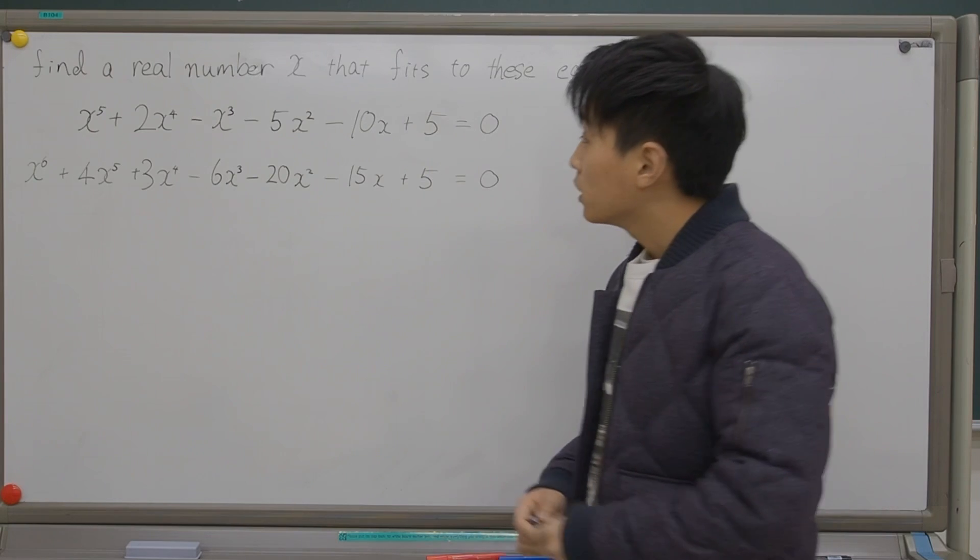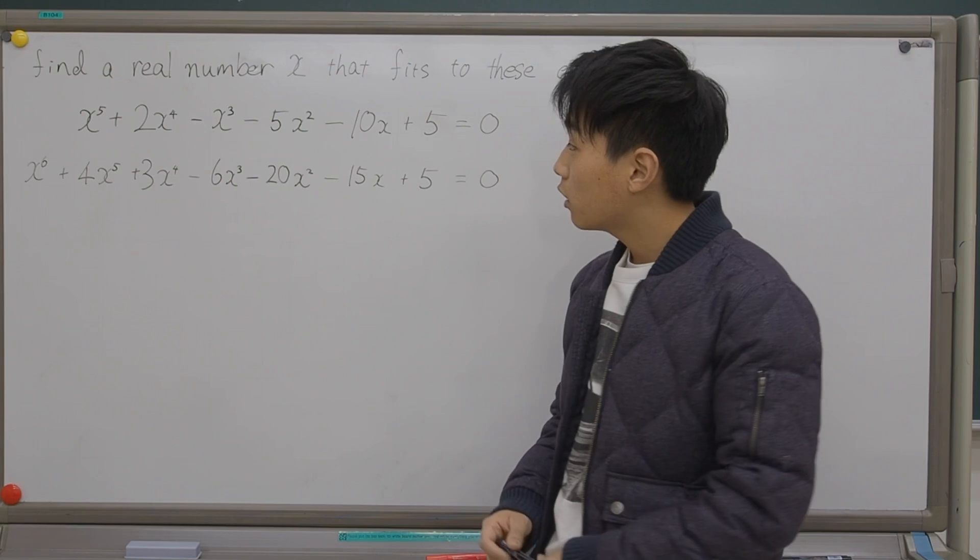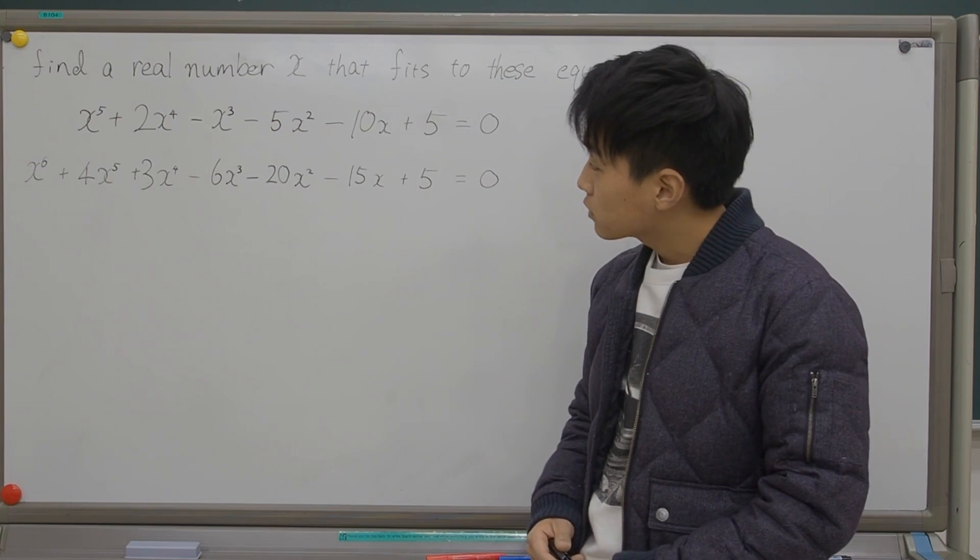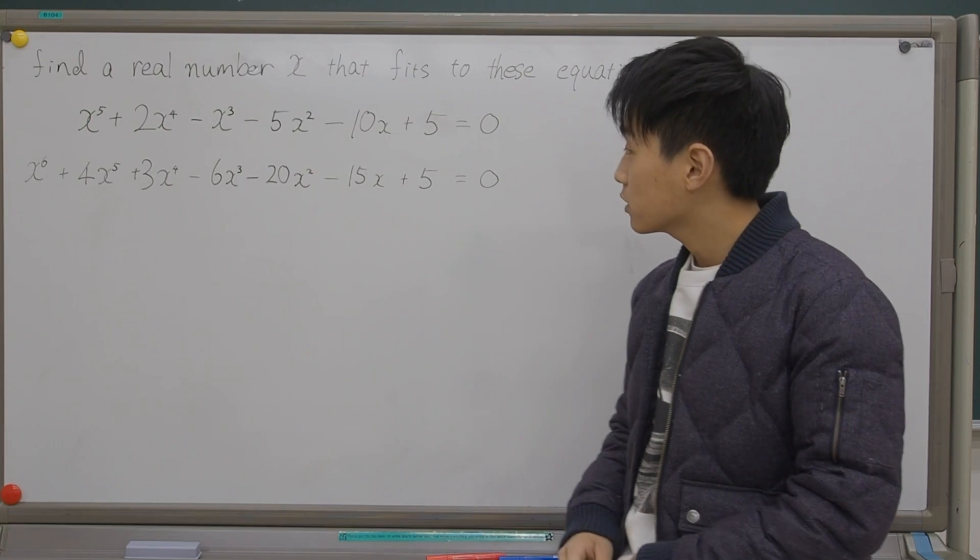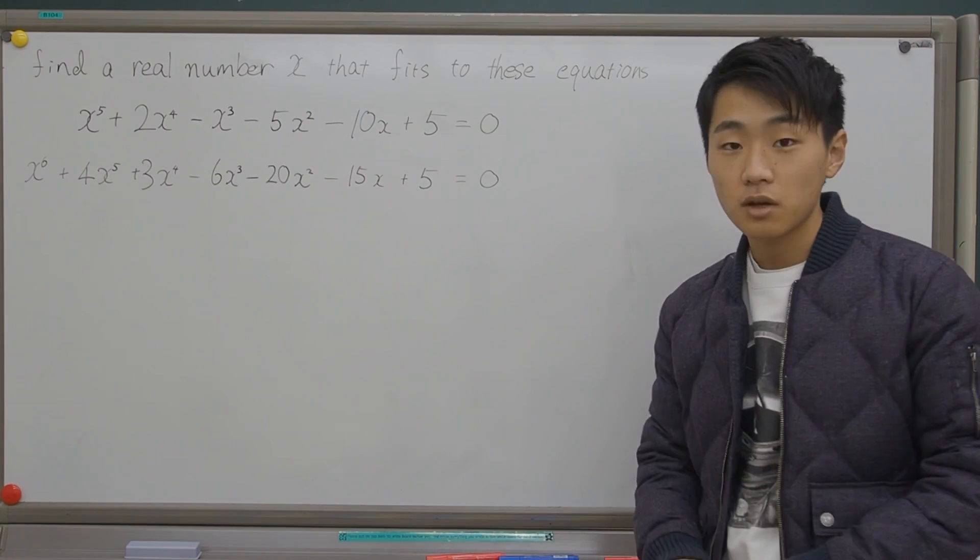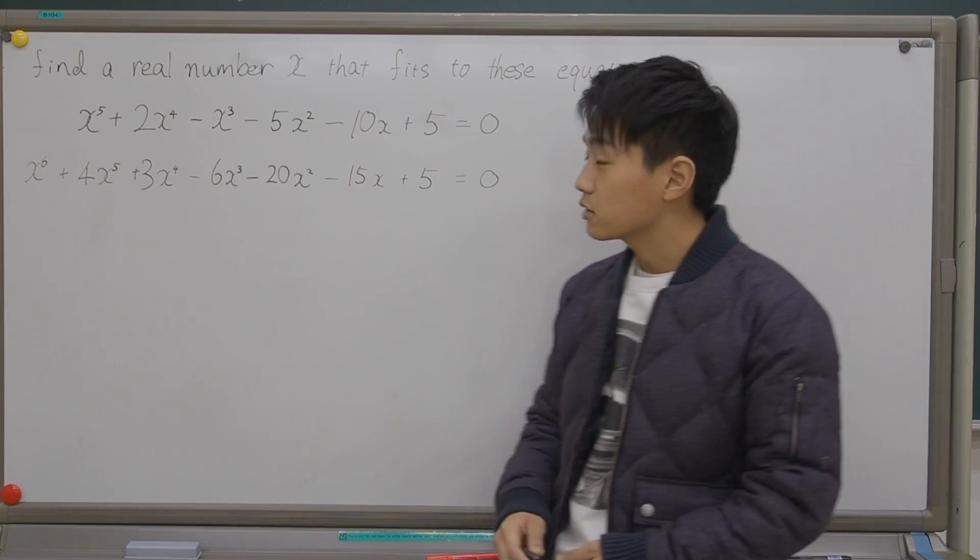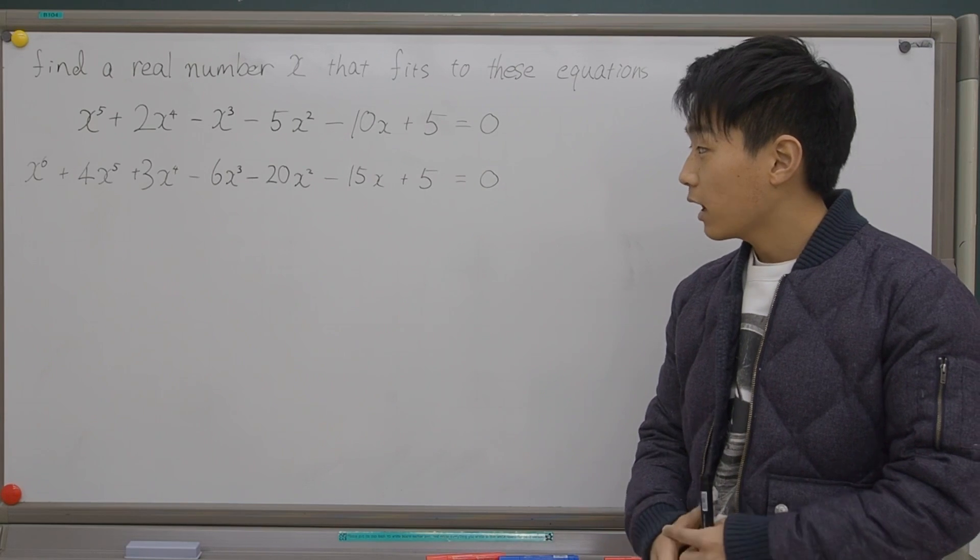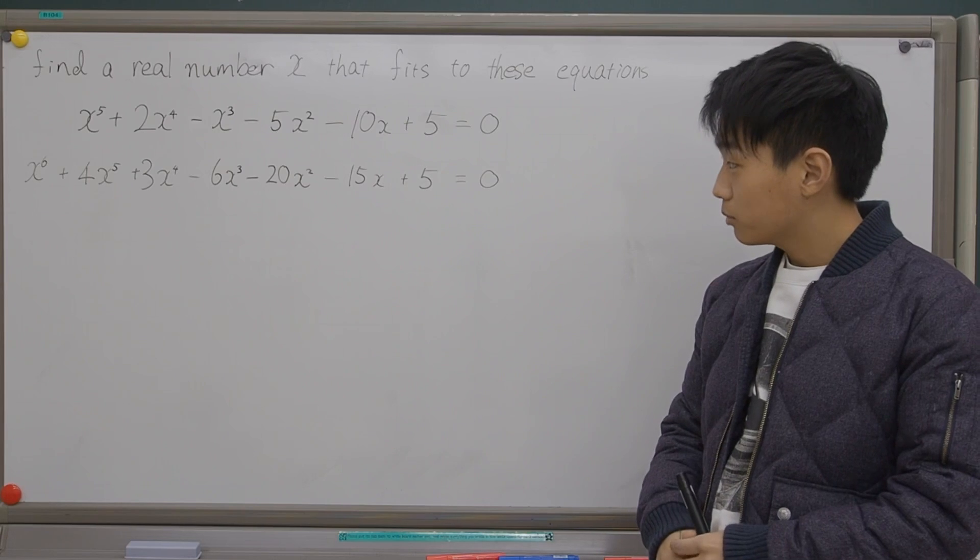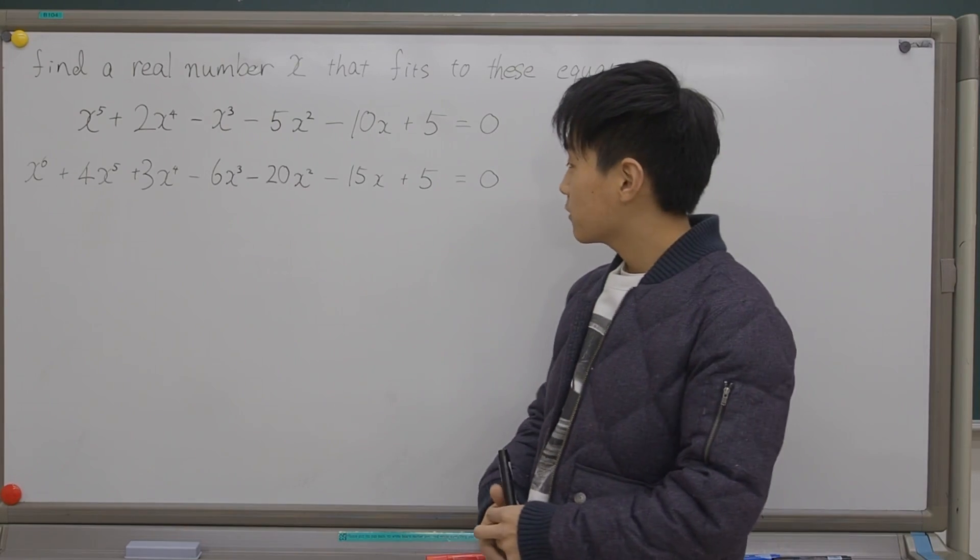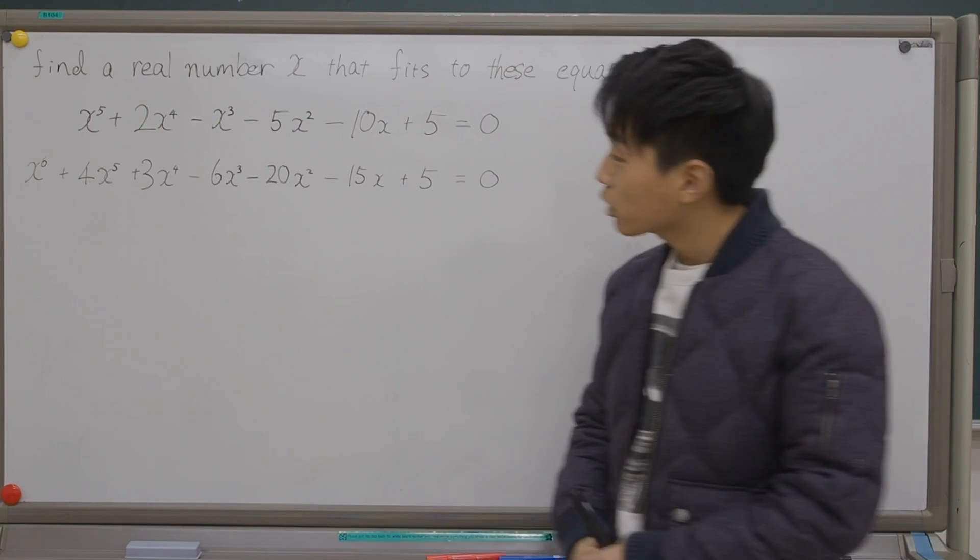The question is pretty simple: find a real number x that fits these equations. The equations are x^5 + 2x^4 - x^3 - 5x^2 - 10x + 5 = 0, that's the first one. And then the second one is x^6 + 4x^5 + 3x^4 - 6x^3 - 20x^2 - 15x + 5 = 0. So it's pretty long and pretty complicated.